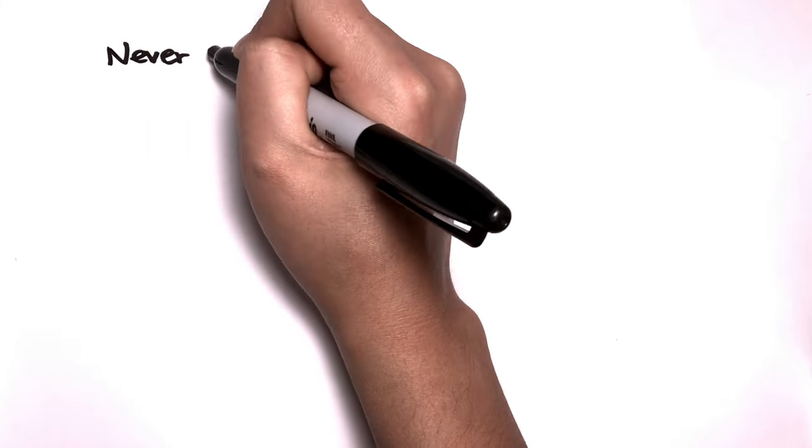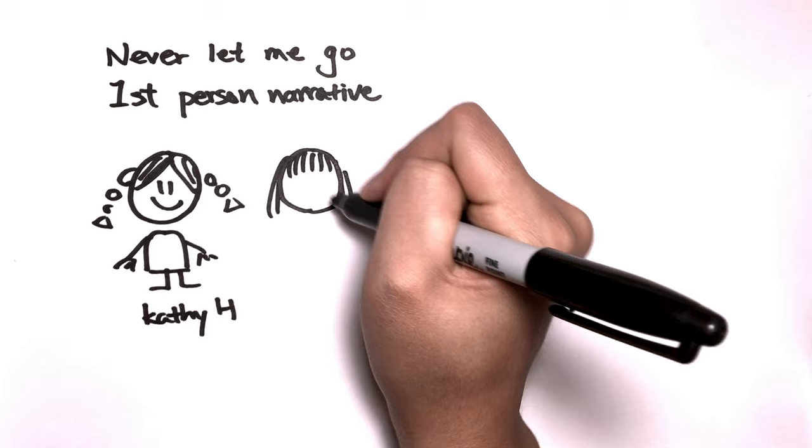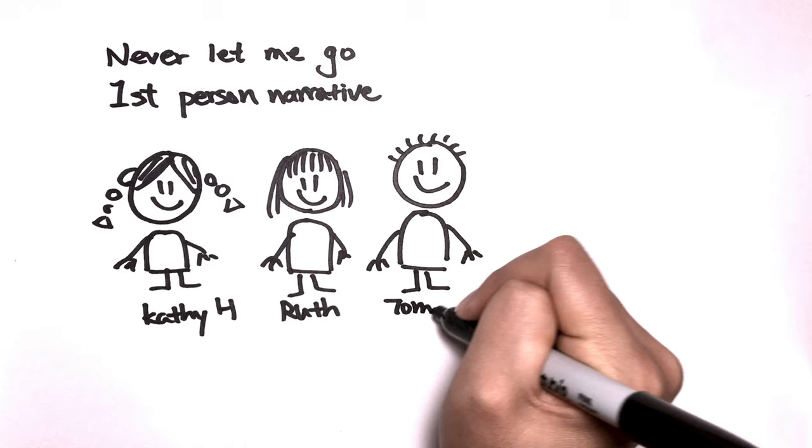Never Let Me Go is a novel by Kazuo Ishiguro. It is set in late 1990s England when cloning first came to be known. The story is a first-person narrative by Kathy H. Kathy H. recalls her childhood with Ruth and Tommy in a sort of private school called Hailsham.